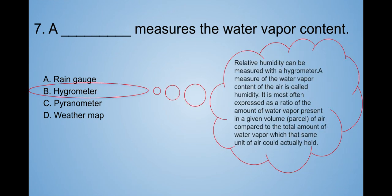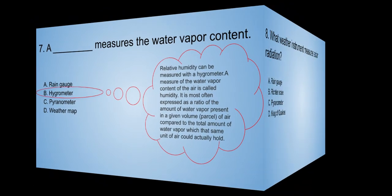The answer is B. Hygrometer. Relative humidity can be measured with a hygrometer. A measure of the water vapor content of the air is called humidity. It is most often expressed as a ratio of the amount of water present in a given volume of air compared to the total amount of water vapor which that same unit of air could actually hold. Okay.